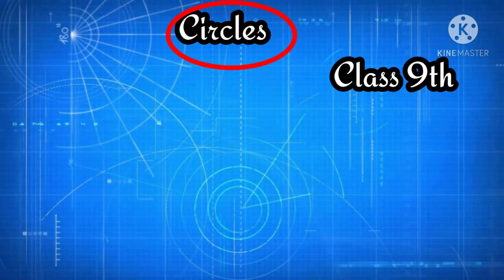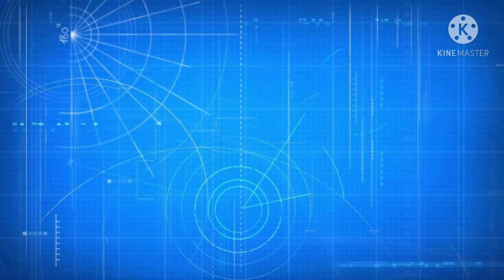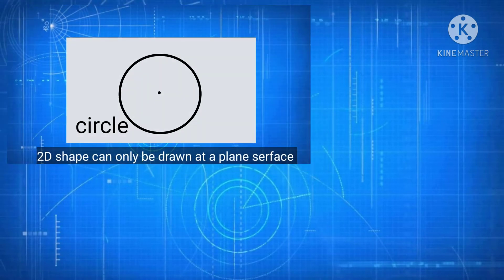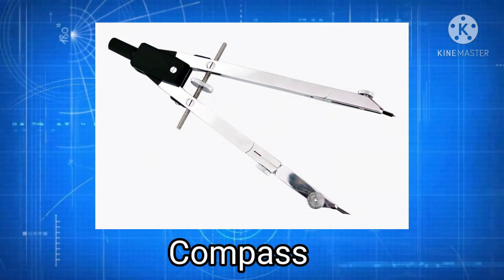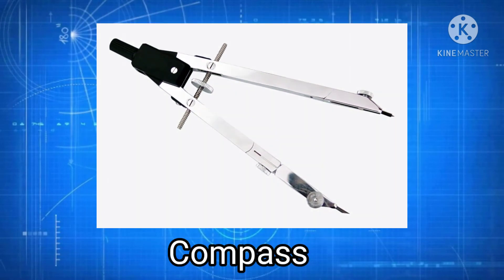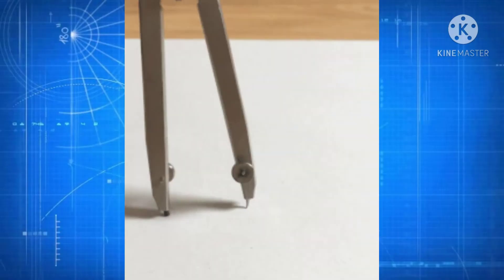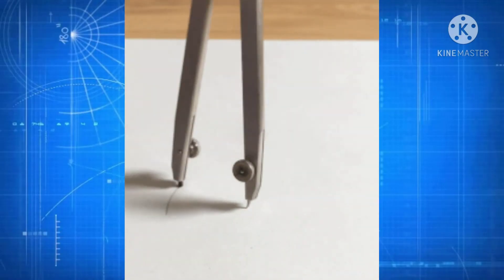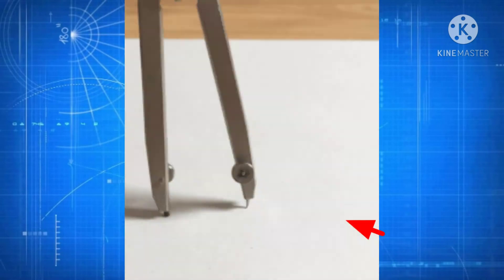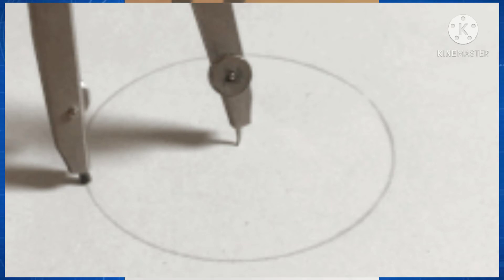Circle is a 2D shape that can only be drawn on a plane surface. To know the exact geometric definition of a circle, think back to earlier classes where we used a compass. By using a compass, we fix one end and rotate the other end of the compass around the first end. What we get is a closed curve, and that closed curve is called a circle.